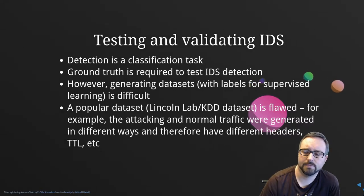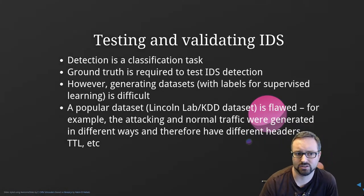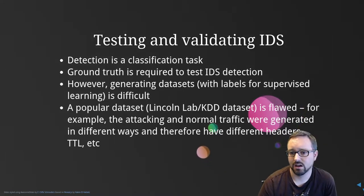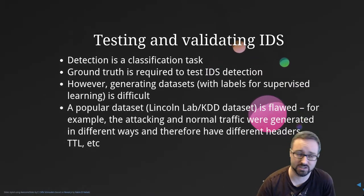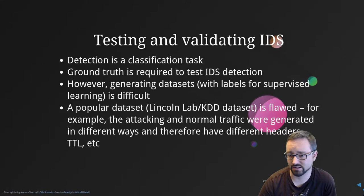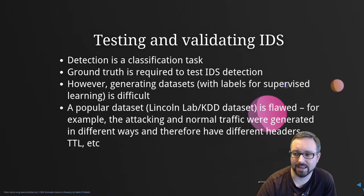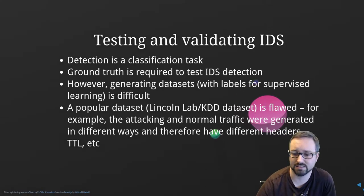If we think about IDS systems in terms of accuracy, we can describe detection as a classification task. To know the accuracy of that classification we need ground truth — we need to know whether or not it was actually an attack so we can measure accuracy. Unfortunately, generating labelled datasets for this purpose, whether for supervised machine learning or to measure IDS accuracy after the fact, is quite difficult.